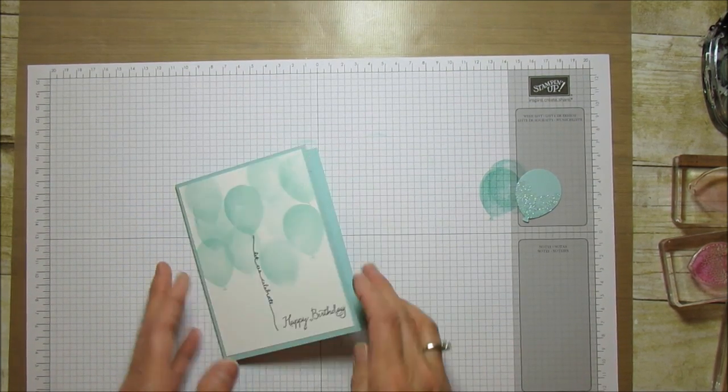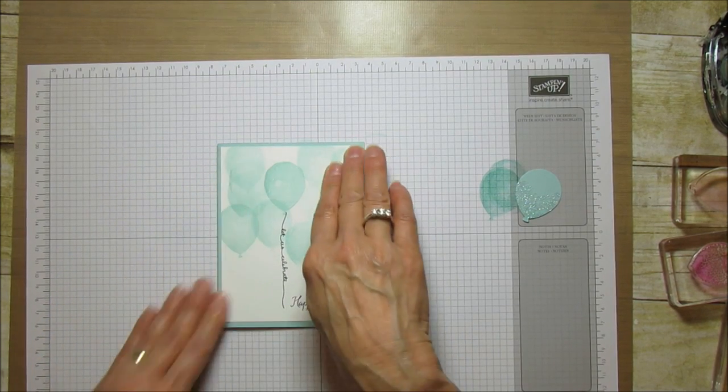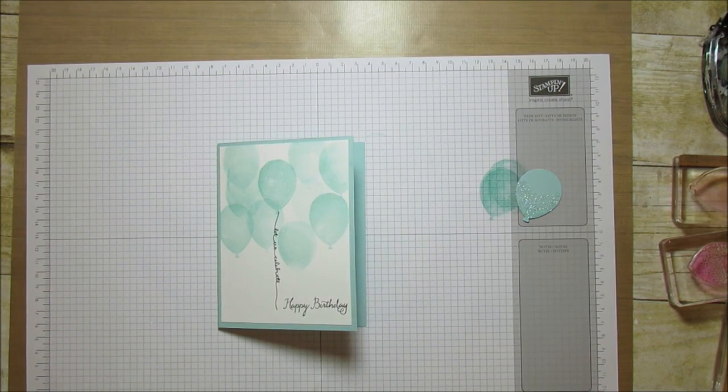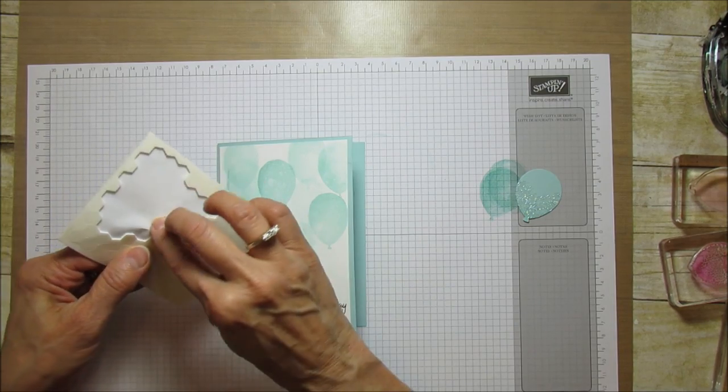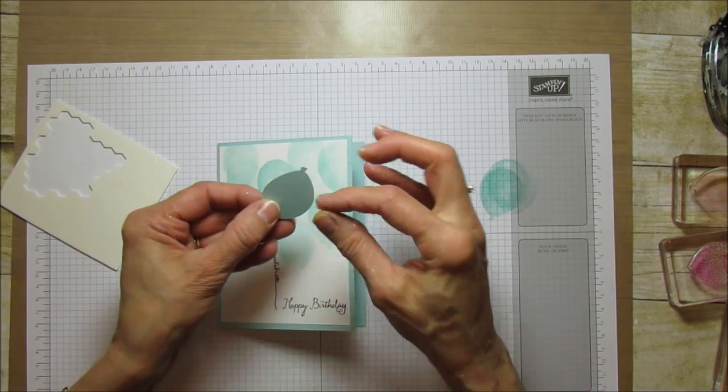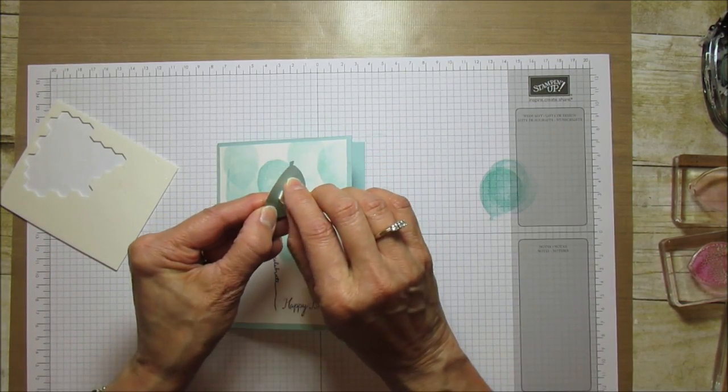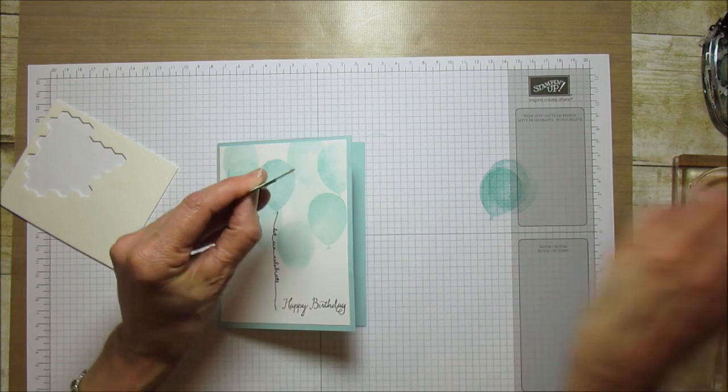I'm going to get a dimensional and I'm going to add it to the back of the balloon. We're going to pop that up right above the string there.